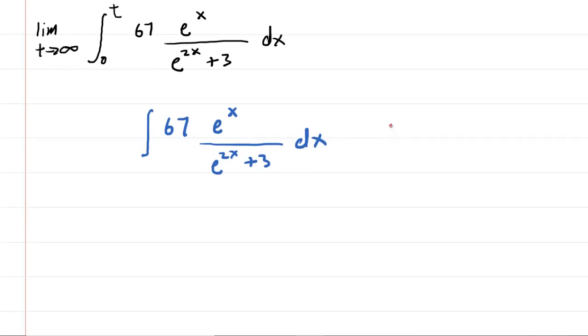We're going to try to let u equal e to the x and see if that bears us any fruit. One tricky thing here is we have an e to the 2x in the denominator. Before we move on we're going to square both sides of this expression. We would have u squared equals e to the x squared, and when you have a power raised to a power you can multiply those powers. This shows us that u squared equals e to the 2x.